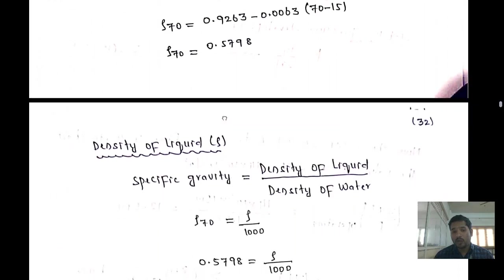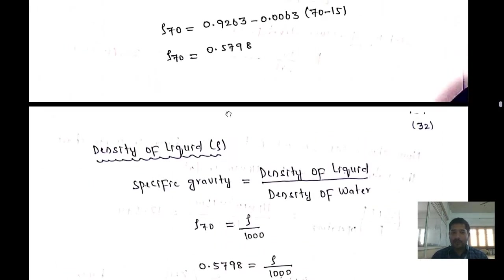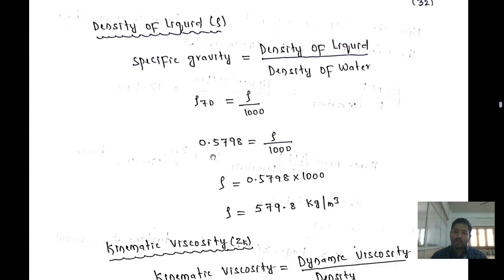To find the density of the liquid, use: specific gravity = density of liquid / density of water. So 0.5798 = ρ_liquid / 1000, giving density of liquid = 579.8 kg/m³.